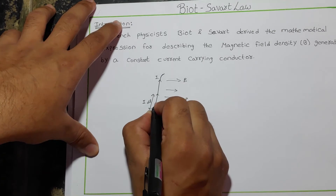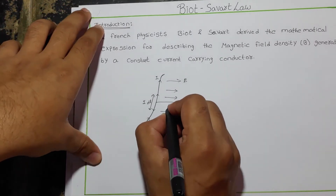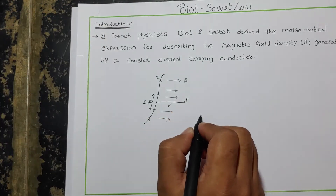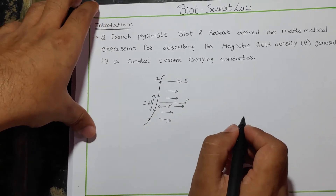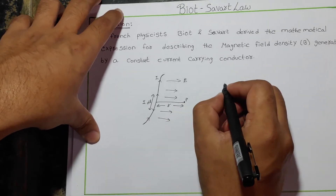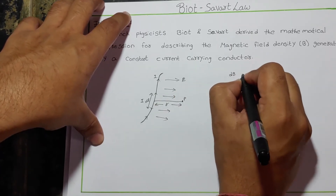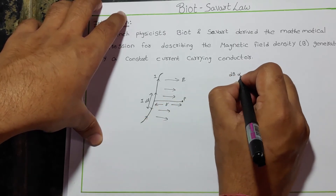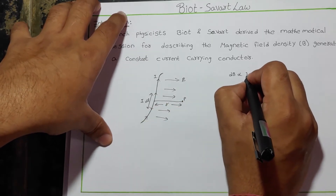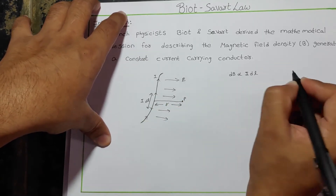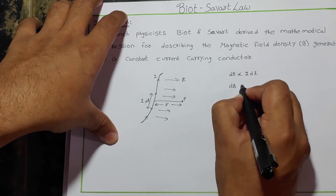Now let us join the point P to the given surface, which is at distance R. Now let us check the proportionality relationships. We know that the differential magnetic field dB is proportional to the length of the wire and the current carrying through it — that is, dB is proportional to I·dl.